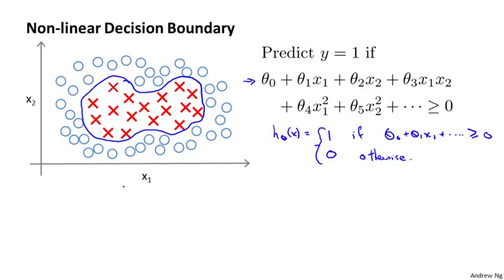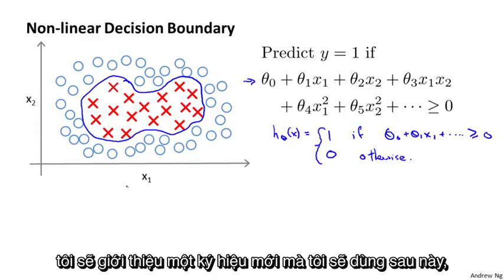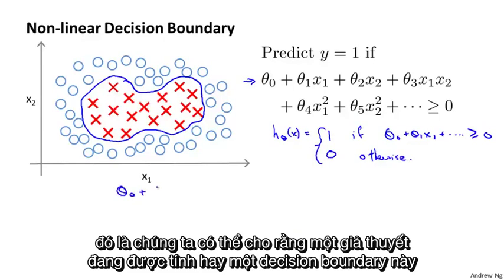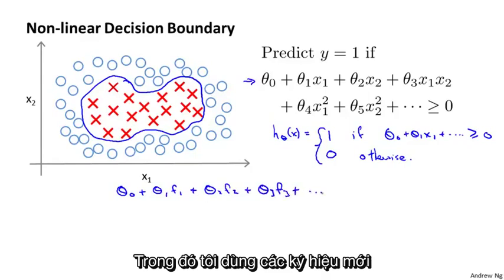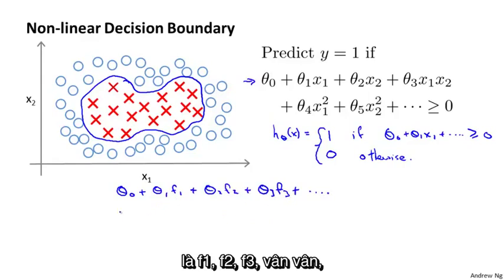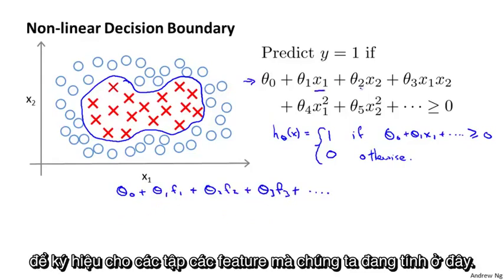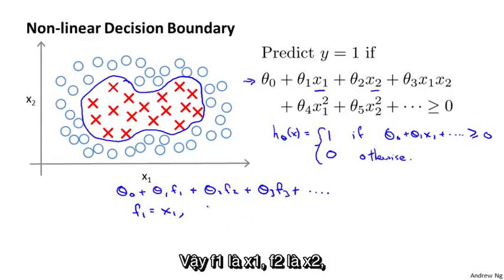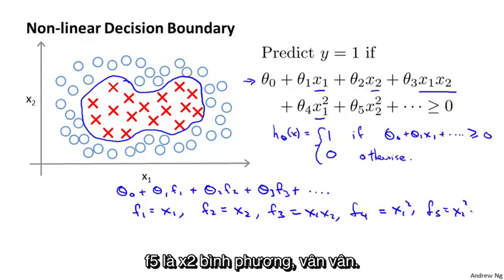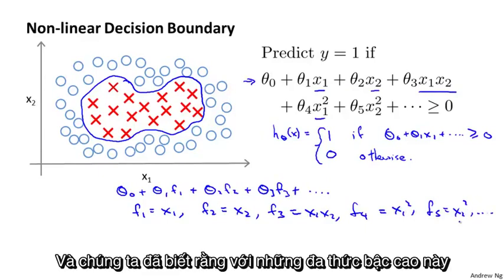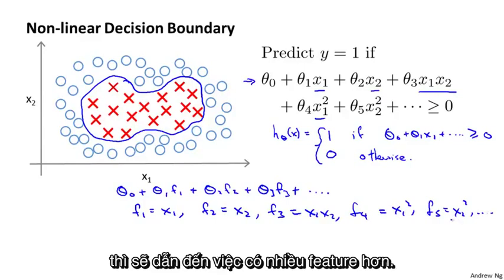Another way of writing this, to introduce a little bit of new notation, is that we can think of a hypothesis as computing a decision boundary using theta zero plus theta one f one plus theta two f two plus theta three f three and so on. Where f one, f two, f three denote these new features I'm computing: f one is just equal to x one, f two is equal to x two, f three is equal to x one times x two, f four is equal to x one squared, f five is equal to x two squared, and so on.